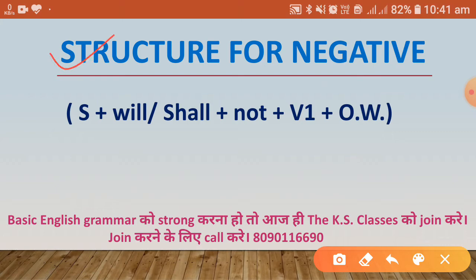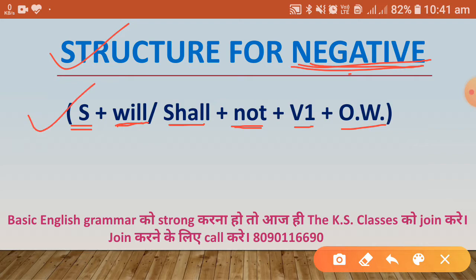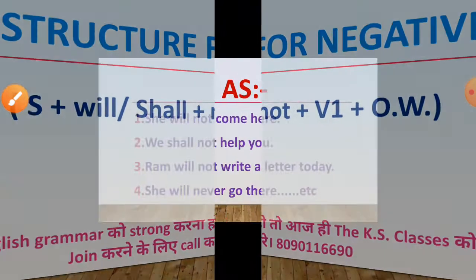Let us see the structure for negative sentences. The structure is: Subject + Helping Verb (will/shall) + not + First Form + Other Words. Just after will or shall, we use 'not,' then the first form of the verb, then other words.